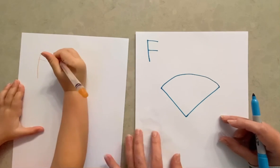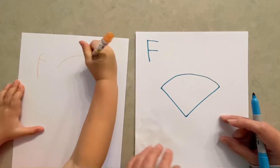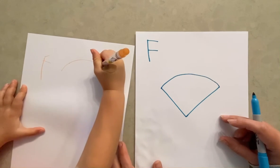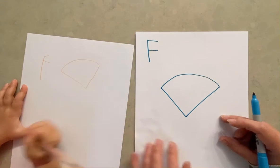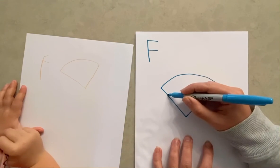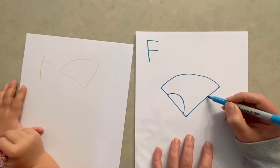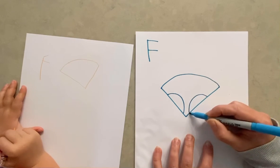All right, now we're going to make two kind of half circles on the side, on the straight sides.